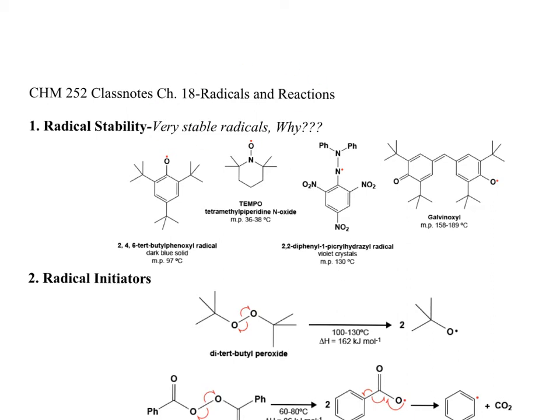Chapter 18 - you can make radicals. This is all about radicals. Radicals, of course, are electron deficient; they do not have a full octet. But there are some radicals that you can literally buy a bottle of - they're stable. Now, how and why could a radical be stable?